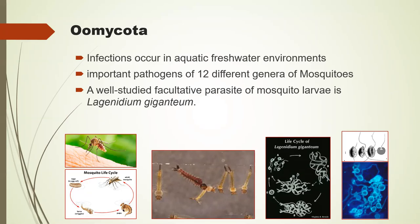The Oomycota — the poor old bleached-out algae that used to be fungi. They occur in aquatic freshwater environments — bubbling streams or even water held in a bromeliad in a rainforest. The Oomycota have important pathogens of 12 different genera of mosquitoes and have been studied for their potential for biological control. A well-studied facultative parasite of mosquito larvae is Lagenidium giganteum. Being facultative gives more flexibility in producing reproductive material outside the actual host.